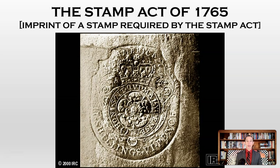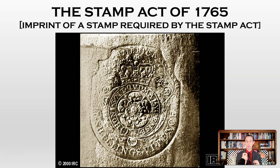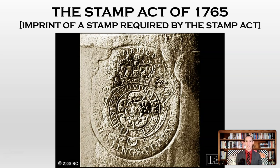The Stamp Act said every piece of paper had to have a stamp on it — that includes deeds, wills, marriage certificates, death certificates, trading documents, newspapers, and playing cards. It cannot be avoided; everyone would have to pay in some way. That's what makes it different from tariffs. Tariffs and duties are taxes placed on specific traded items. The Stamp Act is imposed on everyone with no way to avoid it, and its only purpose is to raise revenue for the government.